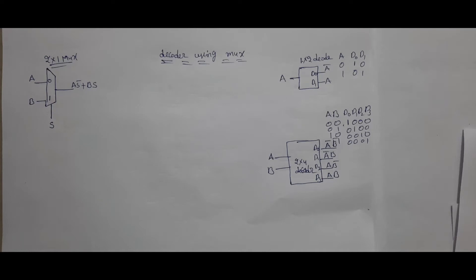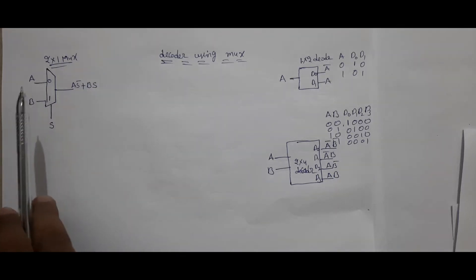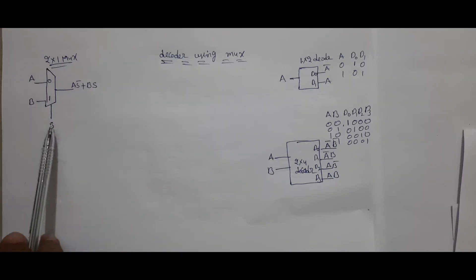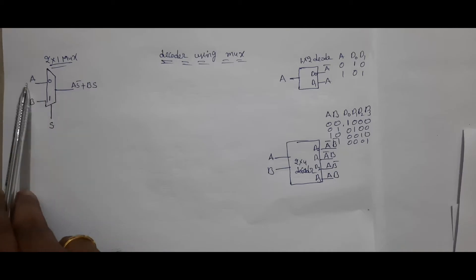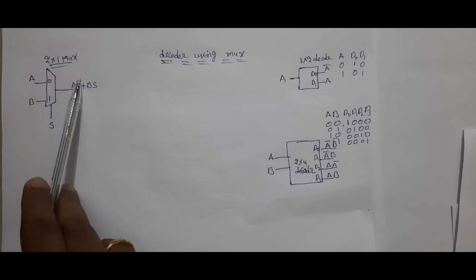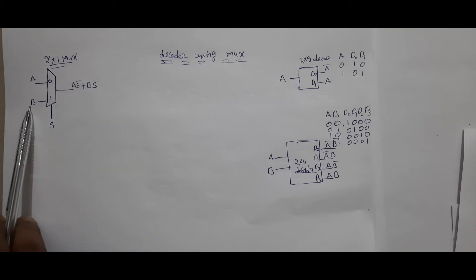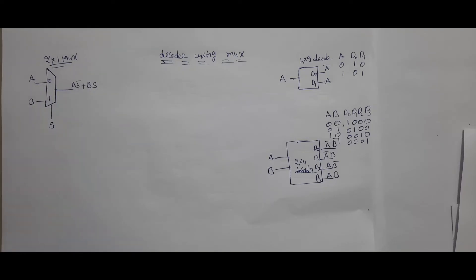Hi everyone. Today I'm going to explain about a decoder using a MUX. Here I have a 2x1 MUX. You know the functionality of a 2x1 MUX: if S is 0, A is selected, that's why A bar; if S is 1, B is selected, that's why A, B, S are all added.